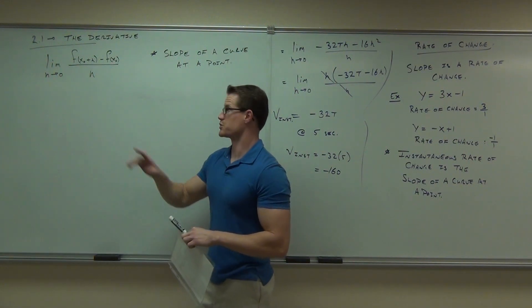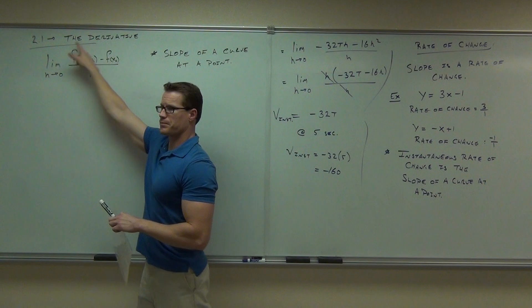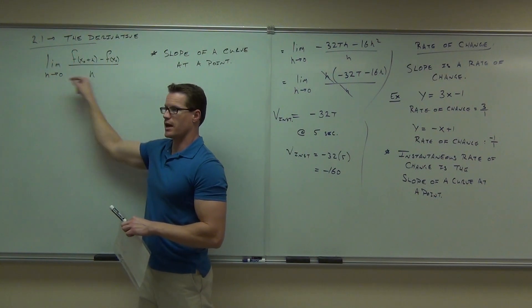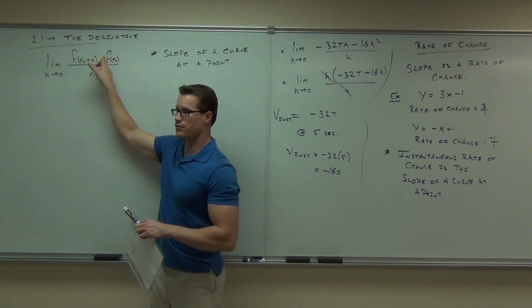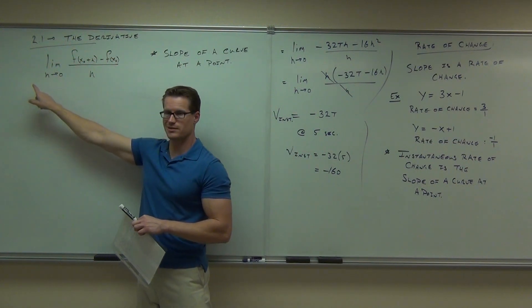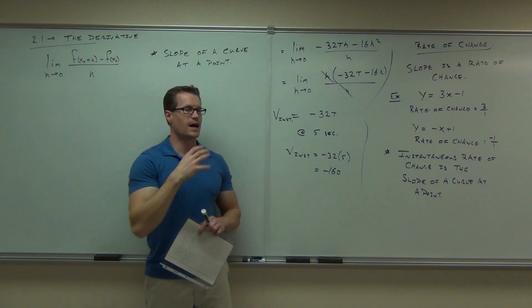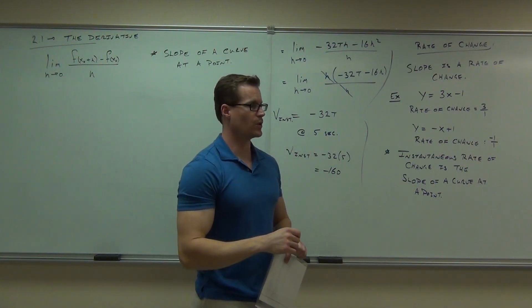This thing stands for the slope, right? This thing says, as you approach one single point. So this is the slope of a curve, that's f, at a single point. What this idea represents is something called the derivative.